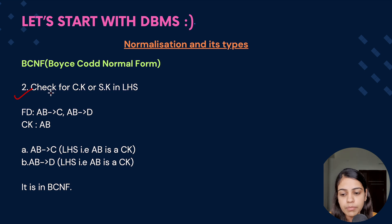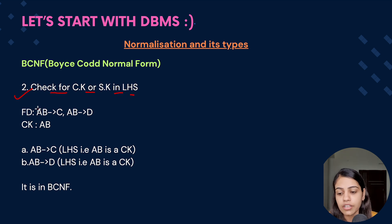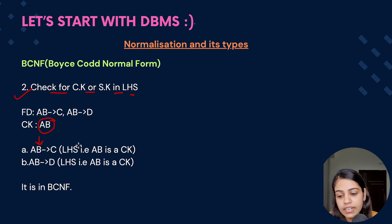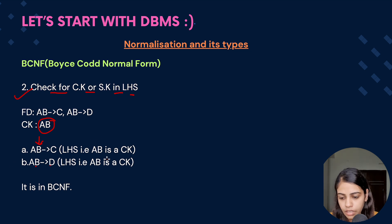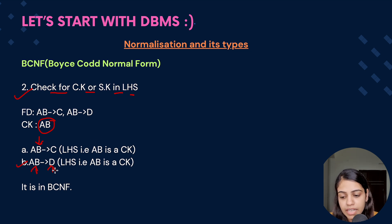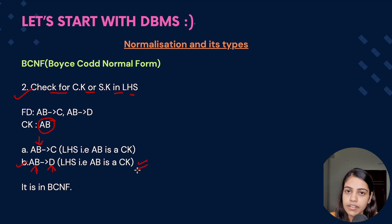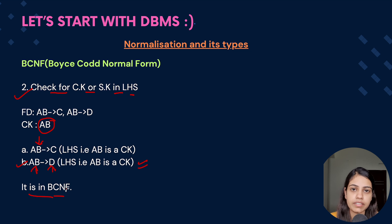As the second step, we check whether the LHS of each functional dependency is a candidate key or super key. For the first functional dependency, AB determines C — since AB is the candidate key, the LHS is a candidate key, so it follows BCNF. For the second functional dependency, AB determines D — again AB is a candidate key, so this also follows the BCNF rule. Therefore, this relation is in BCNF.